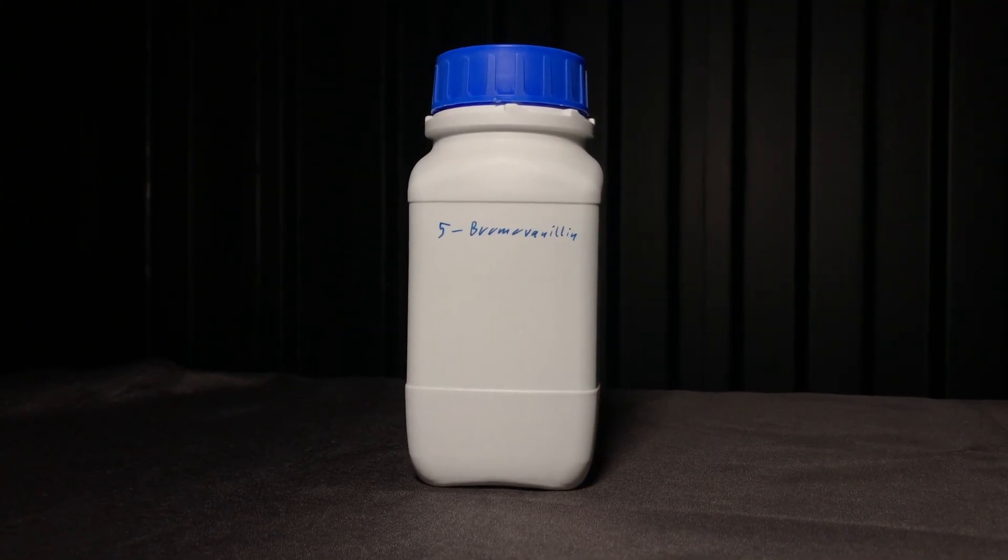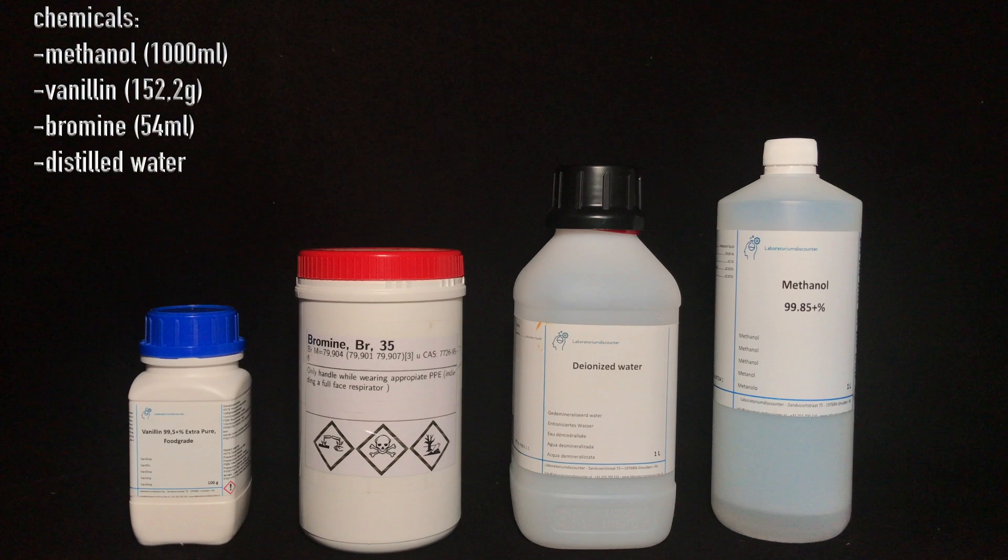It's time to make bromo vanillin. For the synthesis we only need four chemicals: vanillin, bromine, methanol, and distilled water.